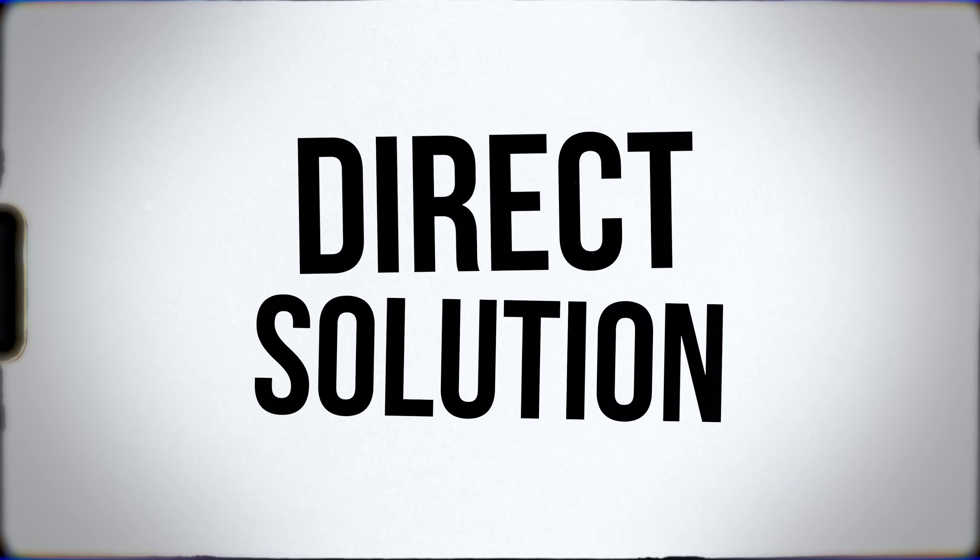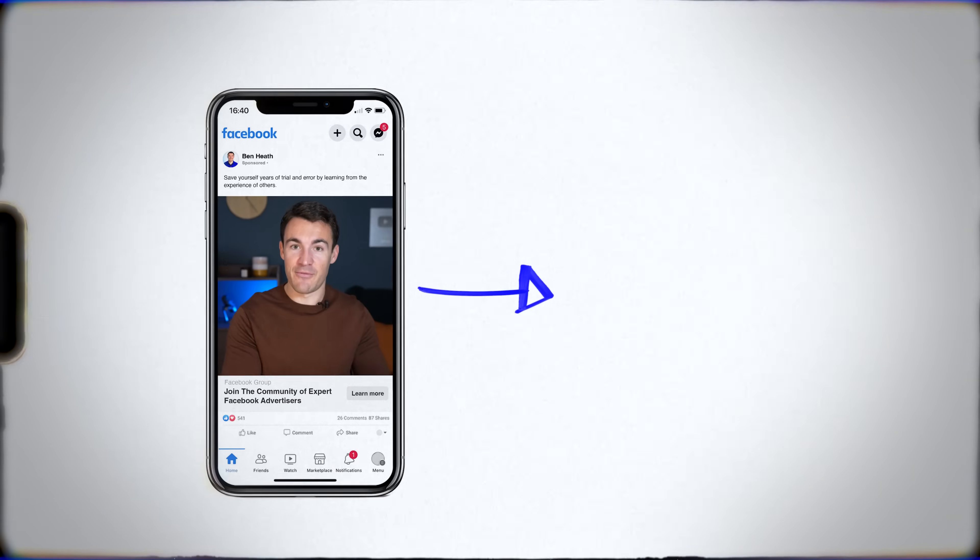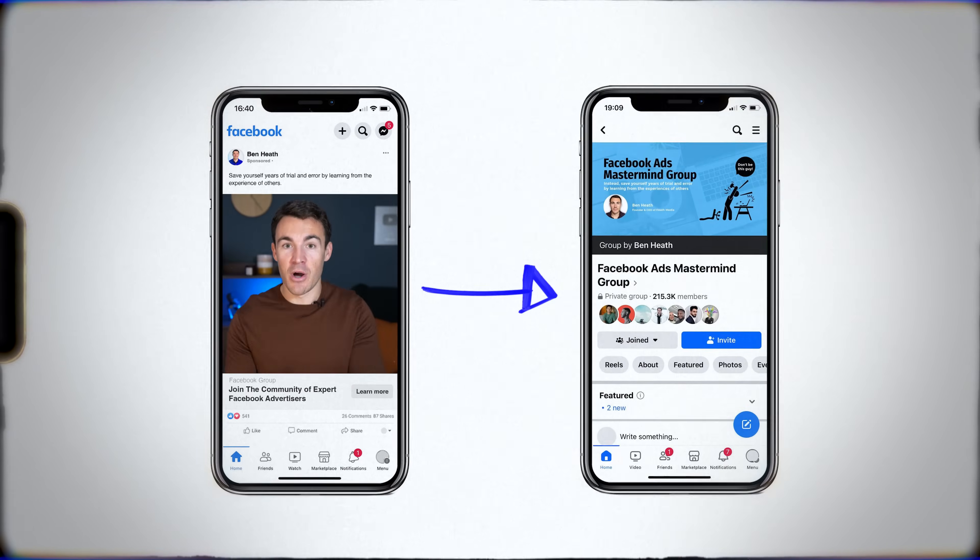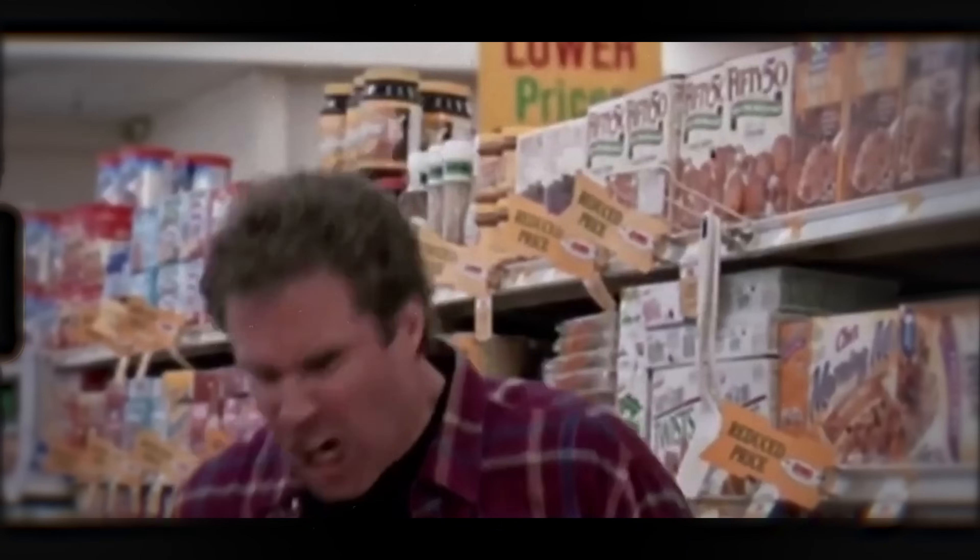We used to use lots of workarounds — ways that we could get people to take an intermediary step, like liking our Facebook page and then inviting them to join the group and all sorts of things to build Facebook groups, because we know how valuable they are. Now we have a direct solution from Meta where we can literally send people directly from an ad to our Facebook group to join it. I think it's going to be a really big deal, so let's get into it.